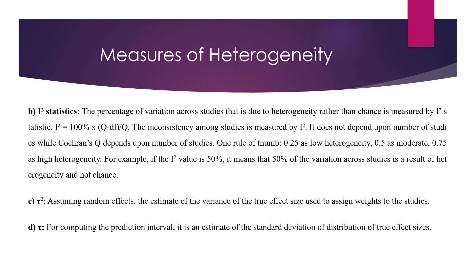Then there is the I-square statistic. It is a percentage of variation across studies that is due to heterogeneity rather than chance. The inconsistency among studies is captured by I-square. I-square does not depend on number of studies, while Cochrane Q depends on number of studies. A rule of thumb says that if I-square is nearer to 0.25, that is low heterogeneity; 0.5 is moderate; and 0.75 is high heterogeneity.